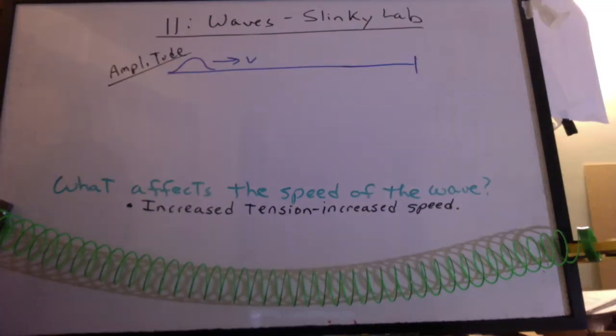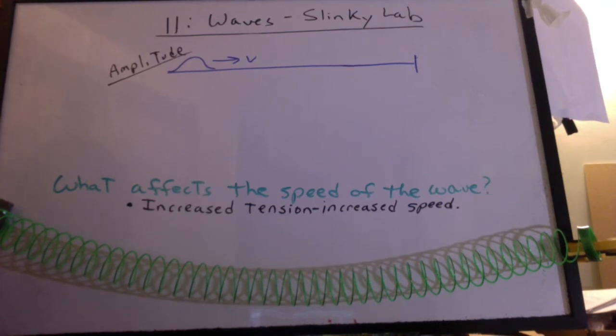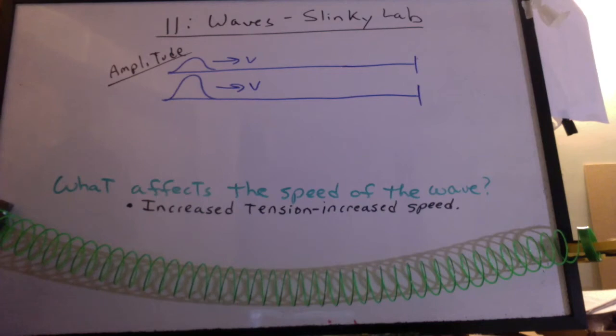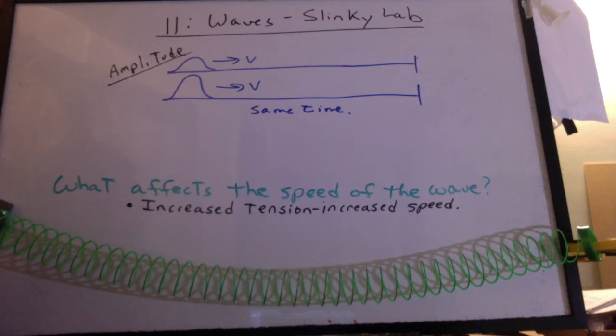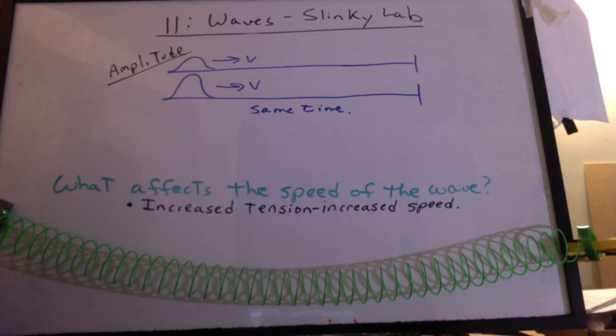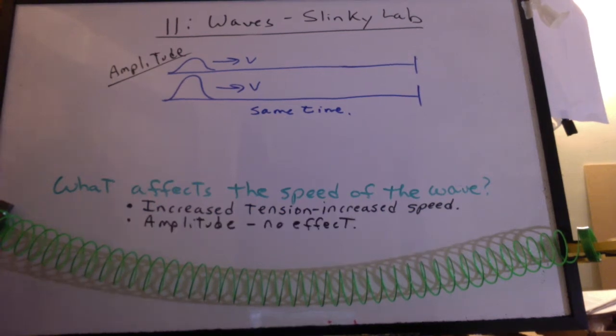The next thing we can do is change the amplitude. First, we make the pulse, time it to go down. Do it again, but make it twice as high, or half as high. We found out that it took about the same time. If we double the amplitude, and you get like a 1% or 2% difference in time, don't worry about it. It's close enough. We'll assume it's the same. So the amplitude had no effect.